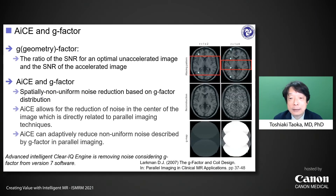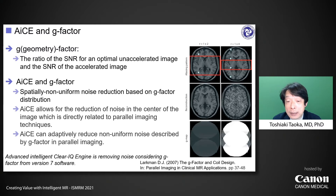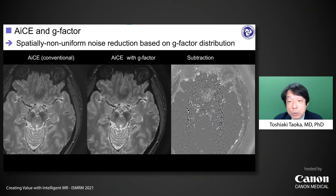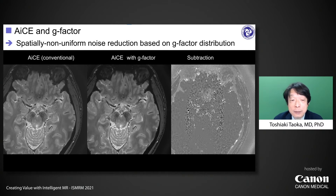AICE can make adjustments considering the g-factor in parallel imaging from version 7 software. The g-factor is a ratio of SNR for an unaccelerated image to that of the accelerated image. In AICE processing, non-uniform noise reduction based on g-factor distribution is performed. AICE can adaptively reduce non-uniform noise described by the g-factor in parallel imaging. By subtracting conventional AICE images from g-factor-considered AICE images, we can recognize the distribution of noise reduction, with stronger noise reduction in the deep part of the brain where SNR is insufficient in parallel imaging.